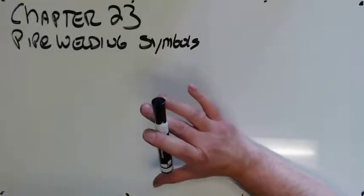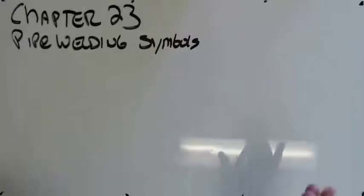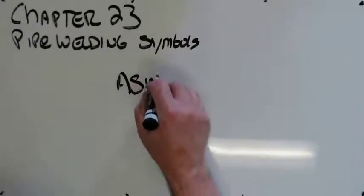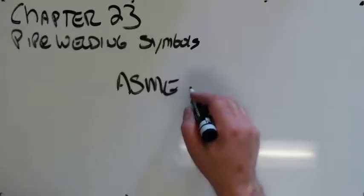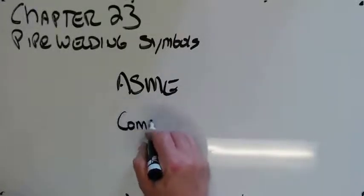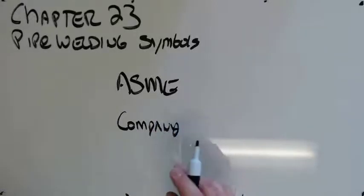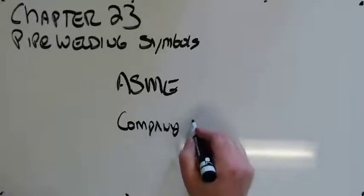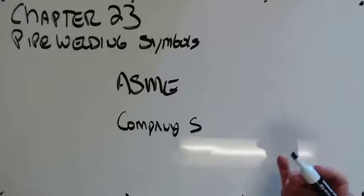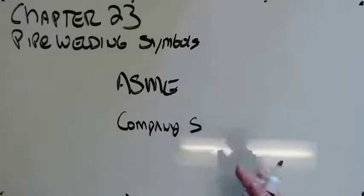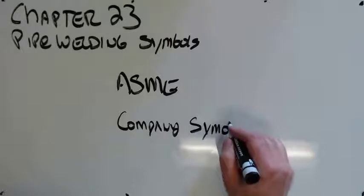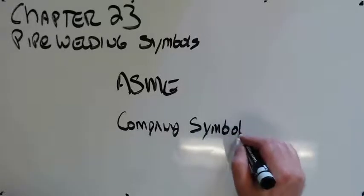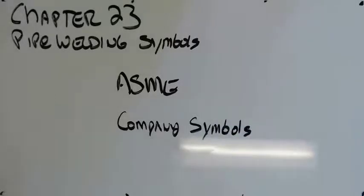So in that world, the main player is ASME. They make all the pipe welding symbols. Now, the place you go to work, the prints you look at are either going to be ASME standard or they're going to be company standard. And what that means is the company is using whatever they want to do. They're using their own symbols, their own methods. The company's going to use their own stuff.